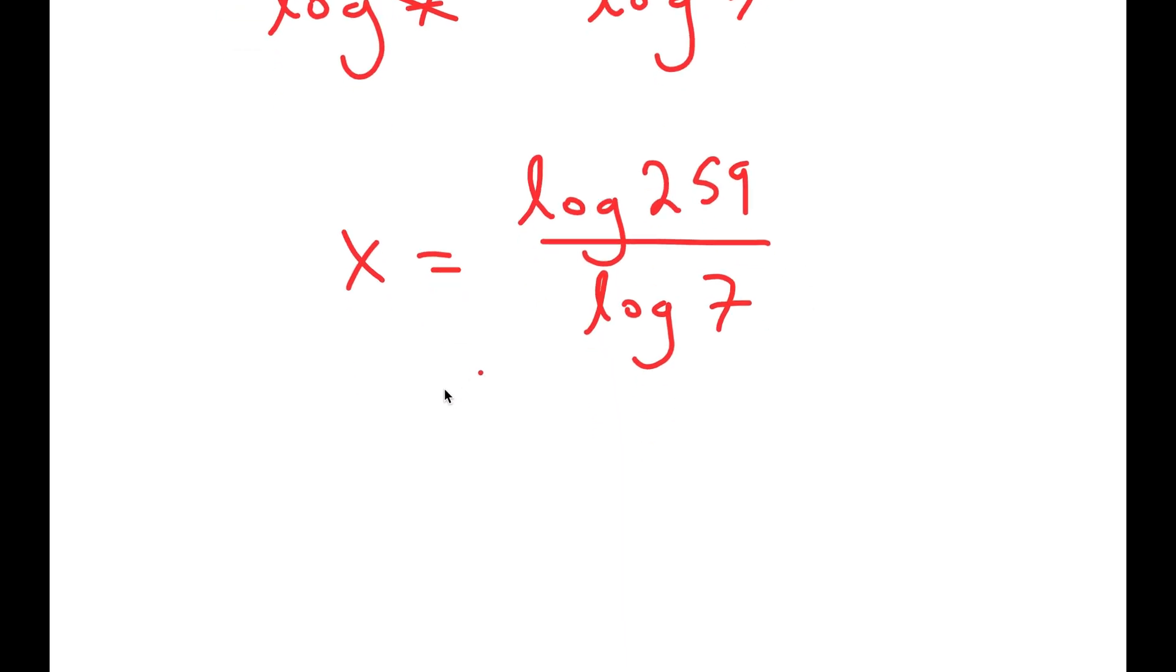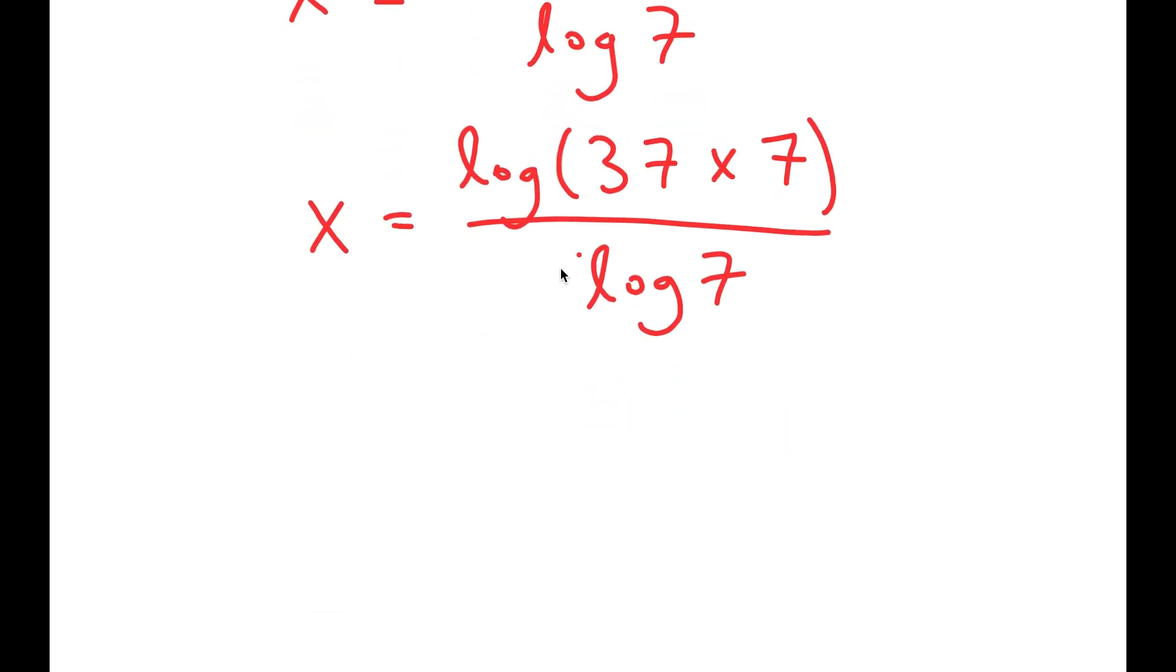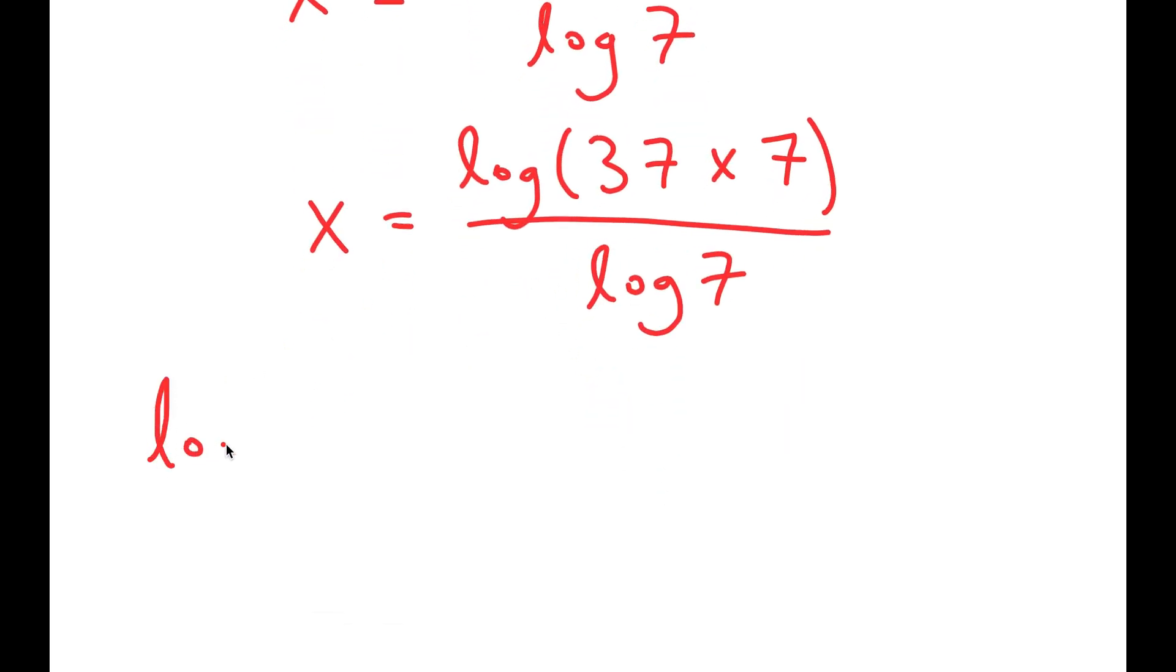And log of 259, I can rewrite that as log of 37 times 7. Now, another helpful property of logarithms is that if I have something in the form log a times b, this is equal to log a plus log b.